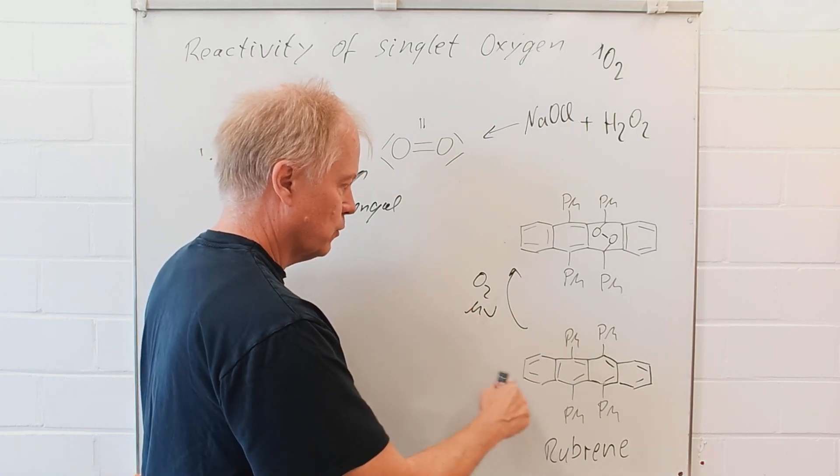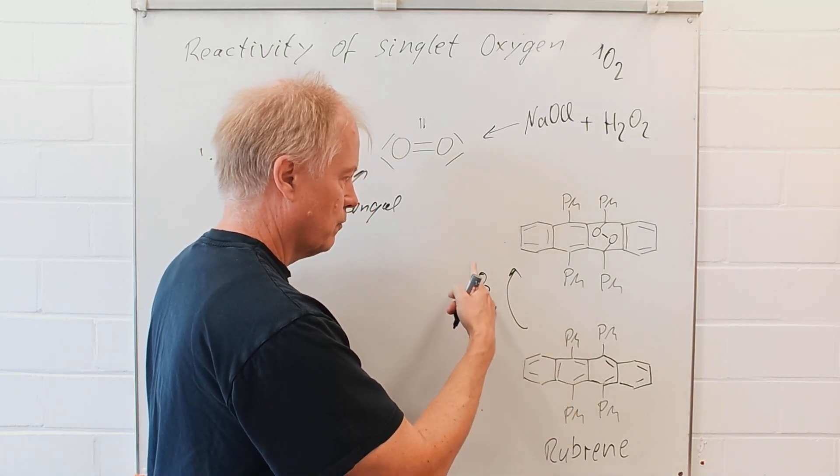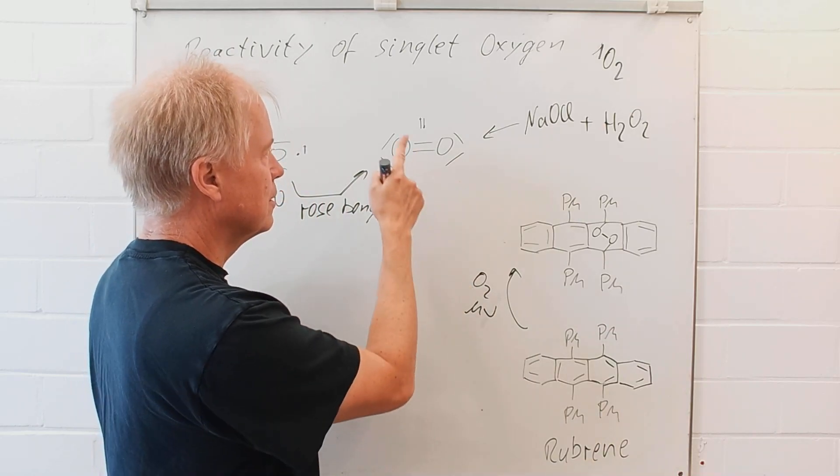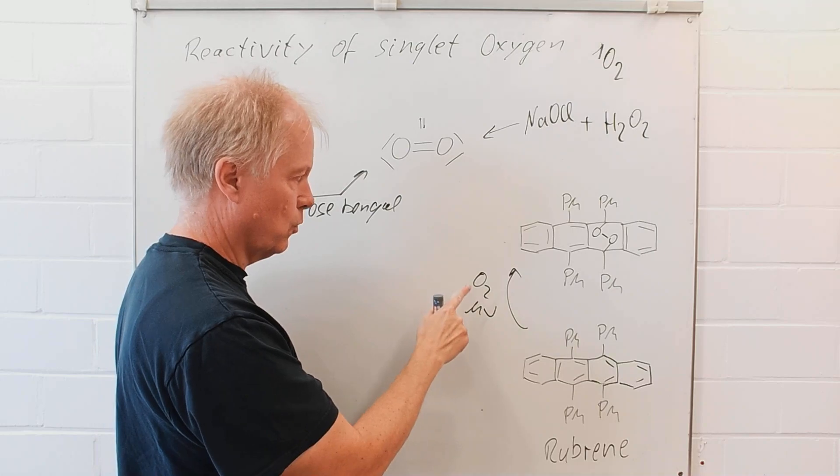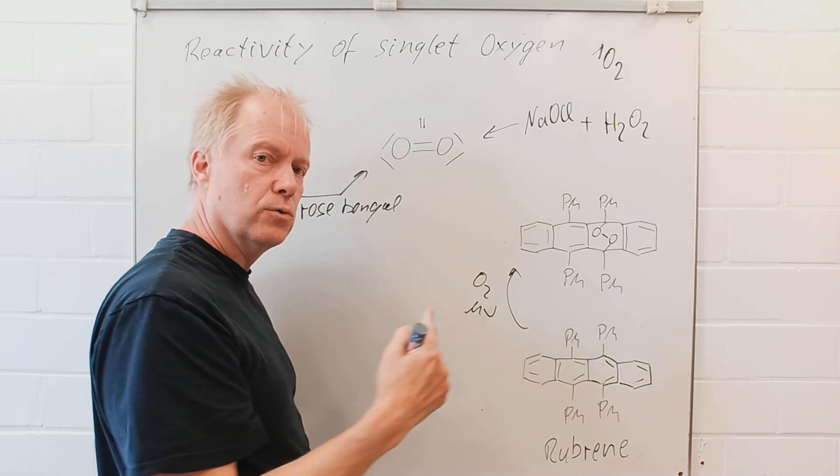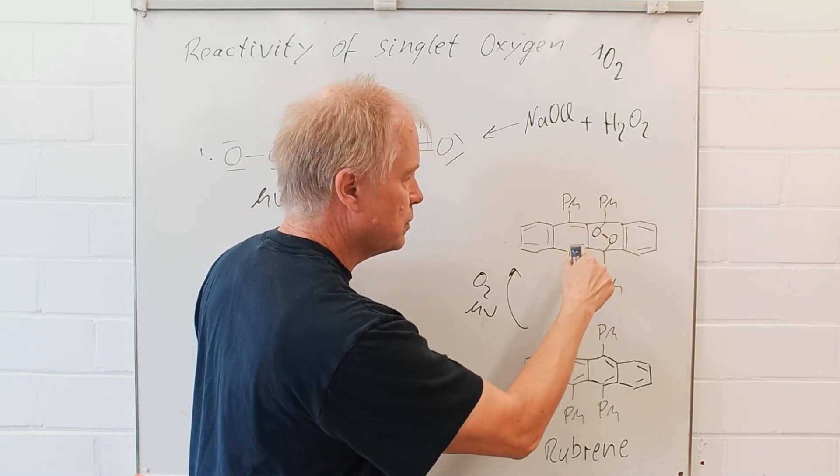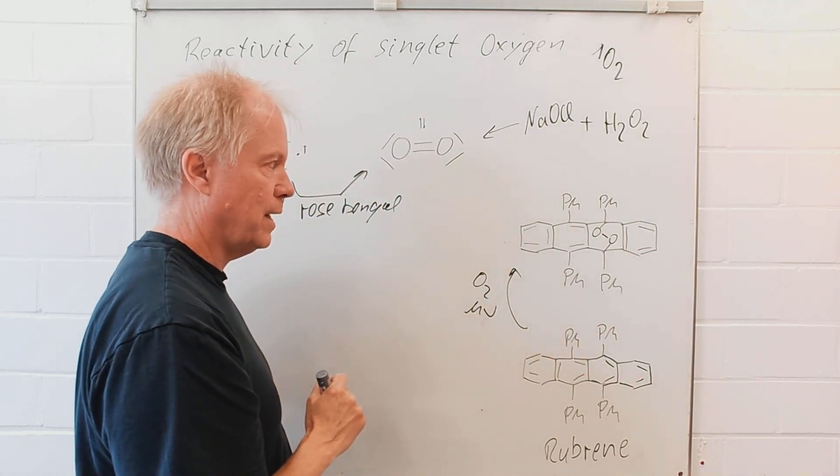Since photochemically, from the triplet oxygen, the singlet oxygen is formed. And this undergoes a Diels-Alder reaction forming this rubrene endoperoxide.